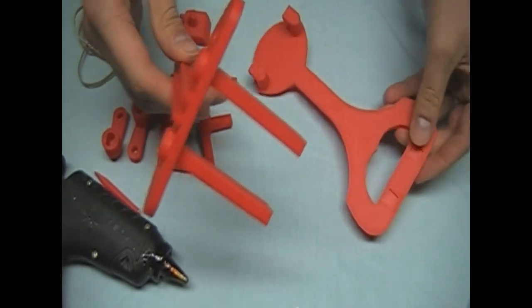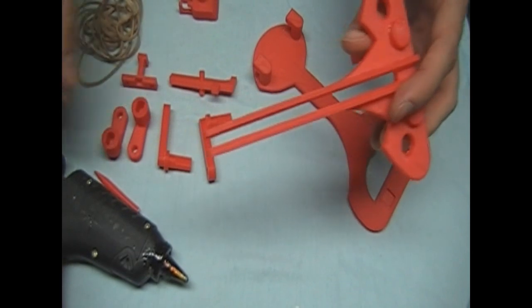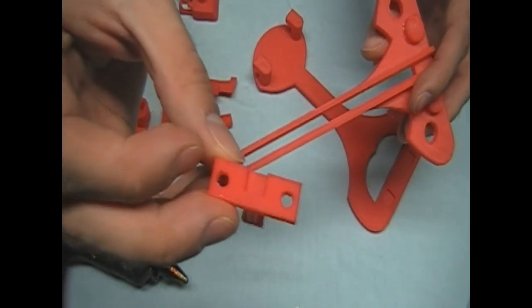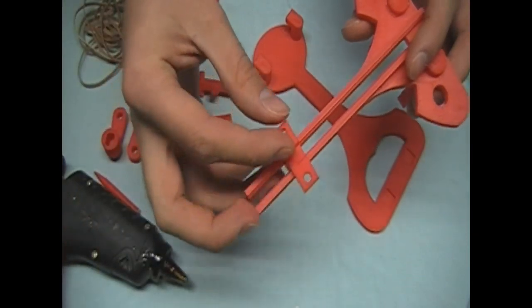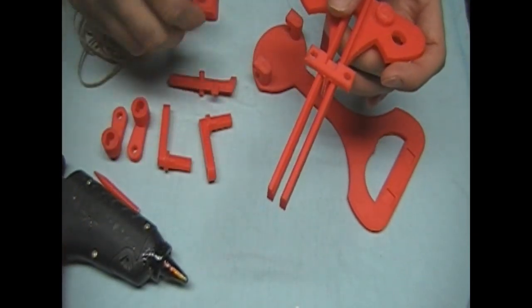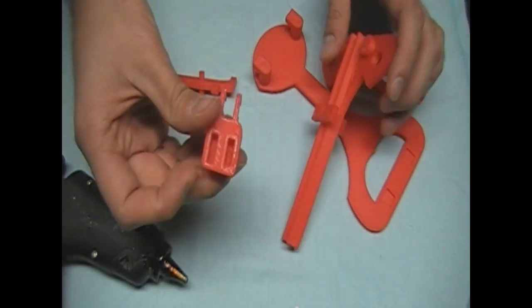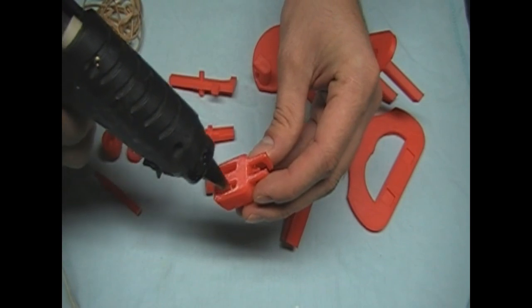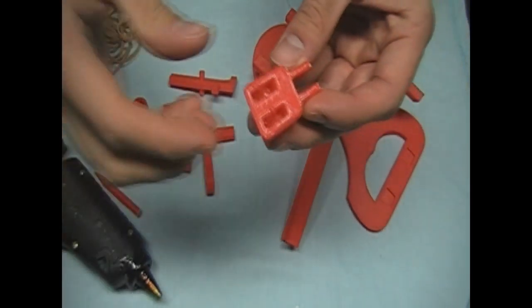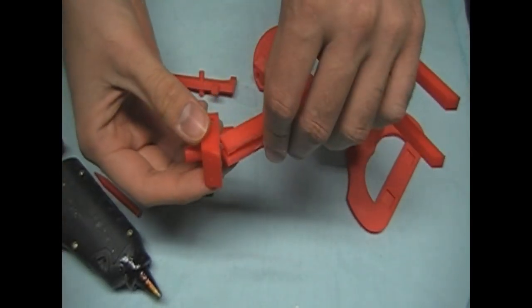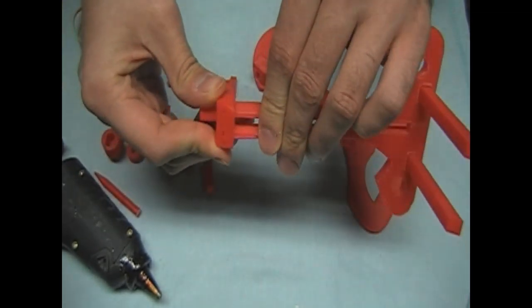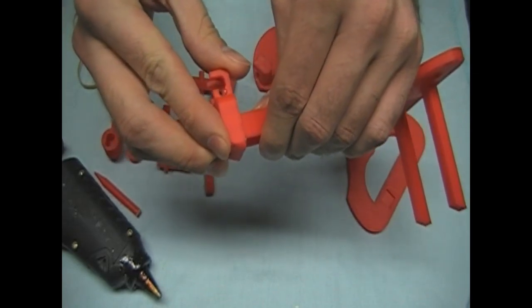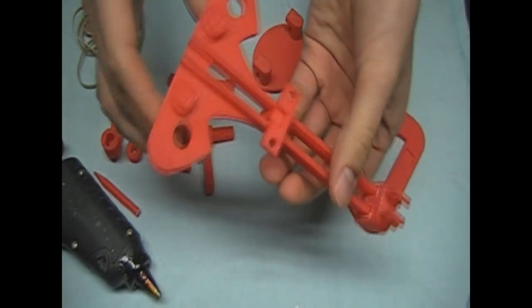Now what we're going to do is put on the pusher. Basically make sure that that little lip is pointed forward. Slide it on and then you're going to take your hot glue gun and put a little bit of glue in the back support, each of these little holes. Then you're going to place it firmly onto the back of the guide. That's all glued together.